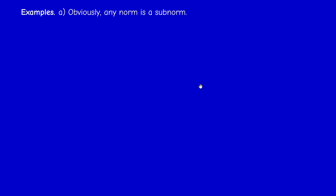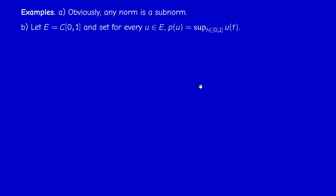Of course a norm is a sub-norm, giving many examples. But let us give a less trivial example — a sub-norm which is not a norm. Take E to be the space of continuous functions from [0,1] into R. For u in E, set P(u) = sup of u(t) — note: not the absolute value. It is easy to check that P satisfies both properties of a sub-norm: P(λu) = λP(u) for λ positive, and the triangle inequality holds.